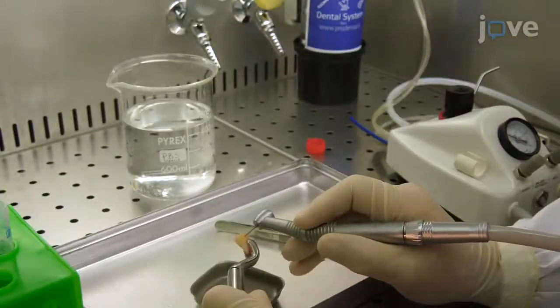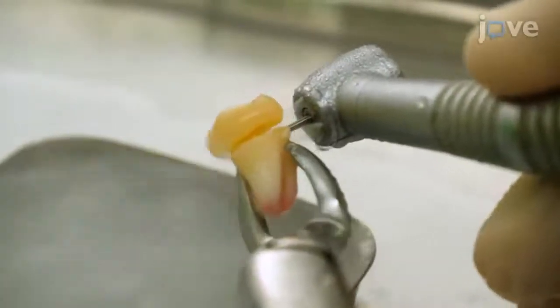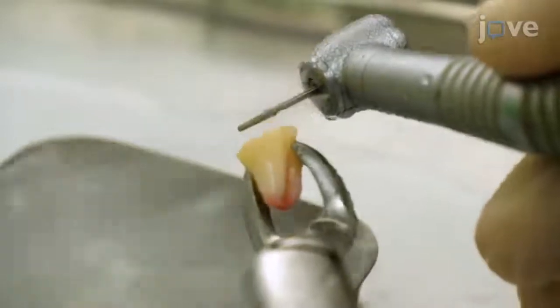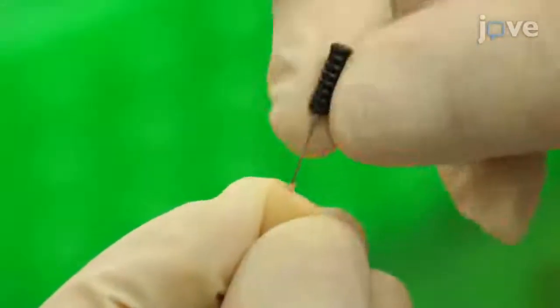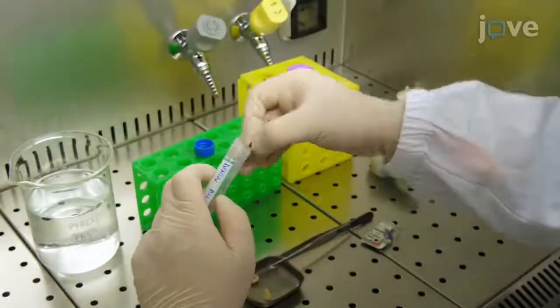Under a biohazard hood, use a cutter to open the tooth by a coronal cutting pass, parallel and tangent through the roof of the pulp chamber. With a small excavator, gently remove the pulp and place it in a test tube.